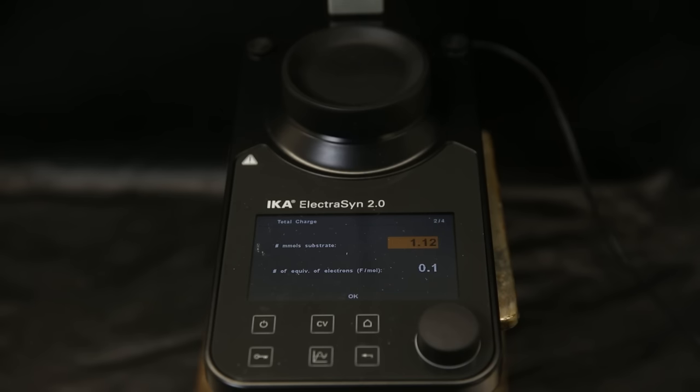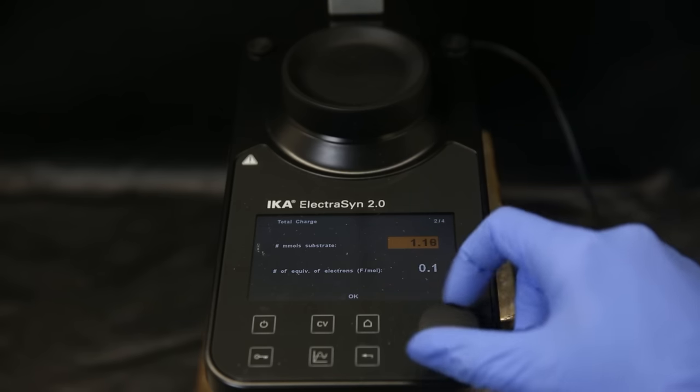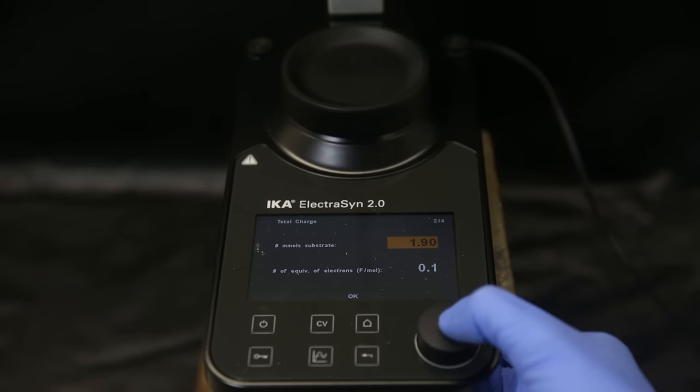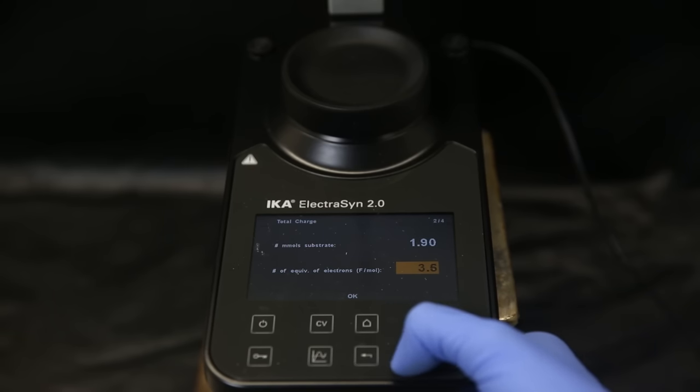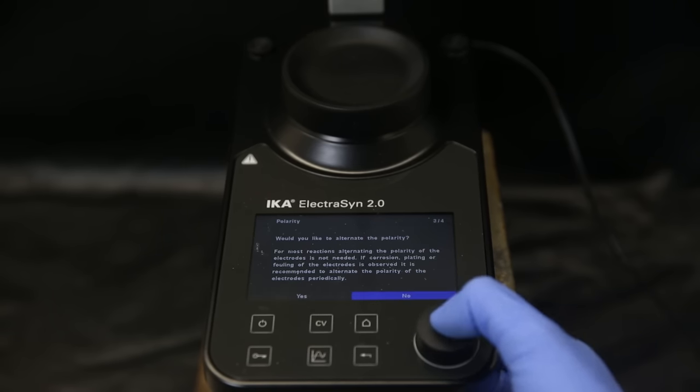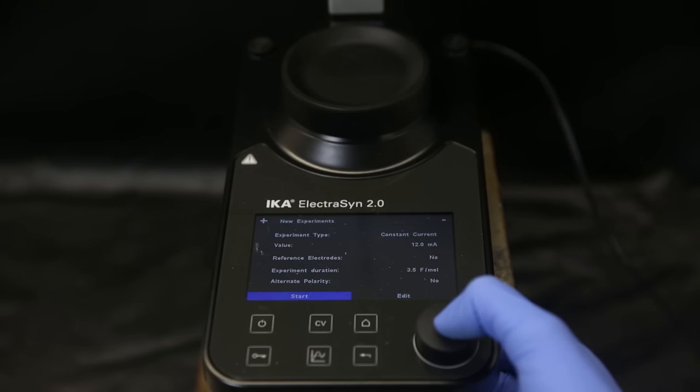First, I select the amount of millimoles of substrate that I am using, which is 1.9. I then use the same value as in the literature for the electrical charge, which is 3.5 Faraday per mole. This means that the device will supply 3.5 mole electrons for each mole of substrate. I then select no for alternating polarity since it is not necessary, and I don't save the experiment.